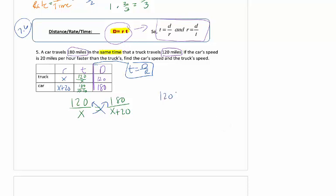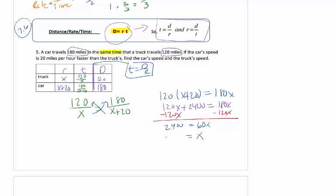I'm cross multiplying now. I get 120 times x plus 20 equals 180x. I'm going to multiply out and distribute, so I get 120x plus 2400. You can use your calculator for any of the ones you're not quite sure on. We're now going to subtract 120x from both sides, and we will get 2400 equals 60x. Divide both sides by 60, and 240 divided by 6 will give me 40.